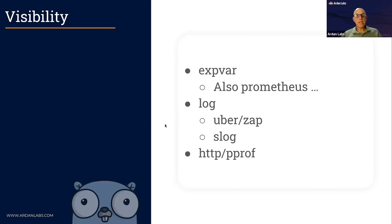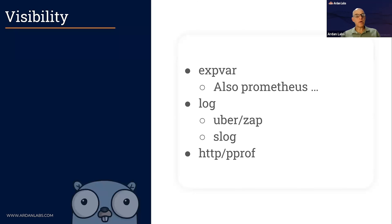When your code is running in production, you need visibility into it. We look at two things: metrics, which tell us how the code is behaving, and logs, which we usually turn to when something goes wrong. Go has built-in packages for both — expvar for metrics and log for logging. You can also use external packages like Prometheus, and you can use middleware to add metrics automatically to your HTTP handlers, including request IDs.